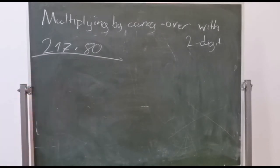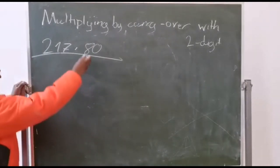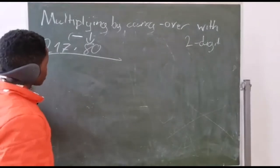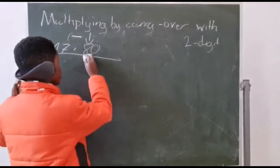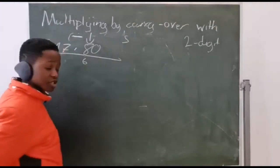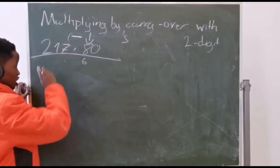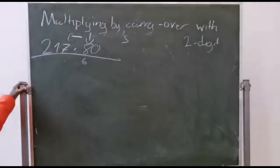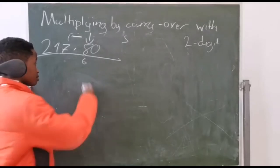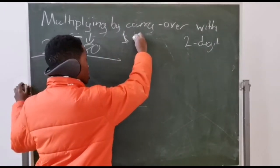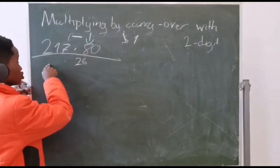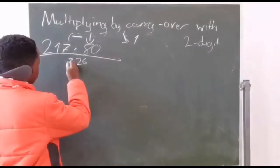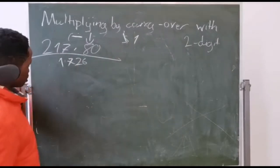The next one is 217 times 18. So we're using the 8 and calculating all of these numbers. 8 times 7 equals 56 — put 6, carry 5. 8 times 1 is 8, but because of the 5 carried, 8 plus 5 equals 13 — cross the 5 and put your 1. 8 times 2 equals 16, plus 1 is 17. So that is the answer for this row.